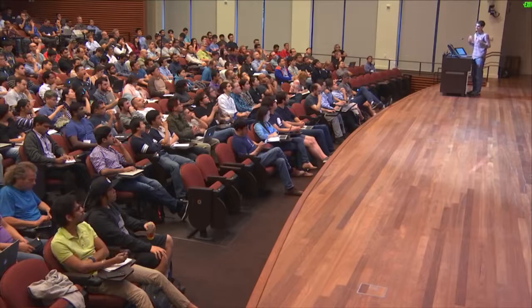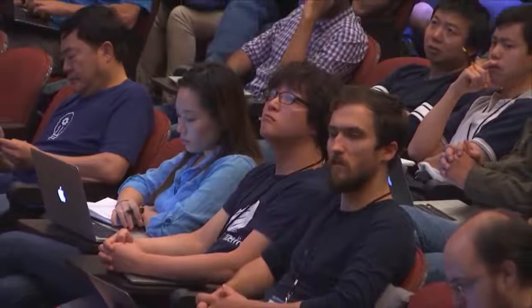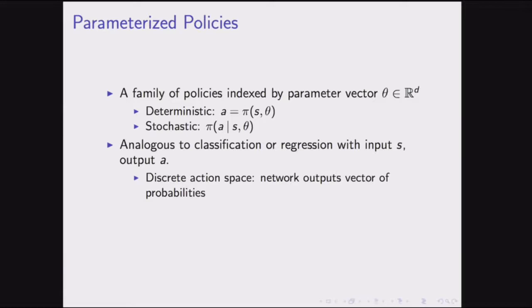How do you concretely use a neural network to represent your policy? You do exactly the same thing as in classification or regression: the state is the input and the action is the output. For a discrete action space, the network outputs a vector of probabilities over actions — exactly like a classifier. For a continuous action space, the network outputs the mean and diagonal covariance of a Gaussian distribution — just like regression. You can use the same architectures you'd use in supervised learning.